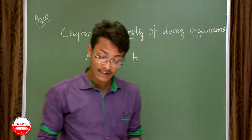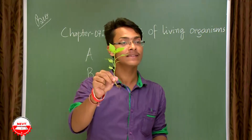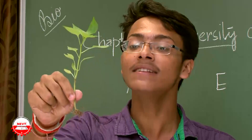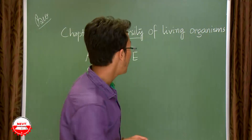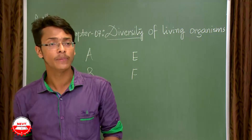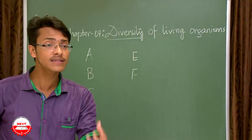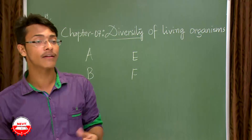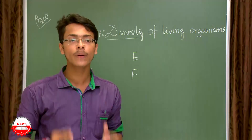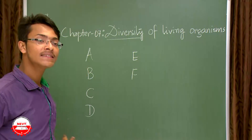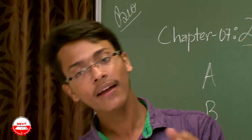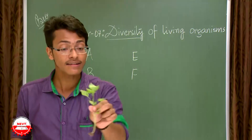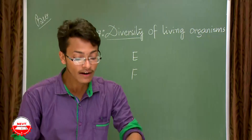Last but not the least, we cannot forget this living organism which is very important for our survival — with green colored leaves, this organism can be named F. Now if I ask how you can distinguish these six organisms A, B, C, D, E, and F from one another, a definite answer from you is that F is a plant while A, B, C, D, and E are animals. So the first basic classification you are doing yourselves is that this is a plant and the rest I showed you are animals.